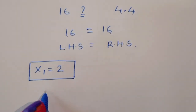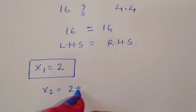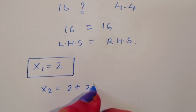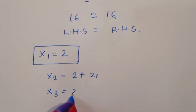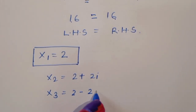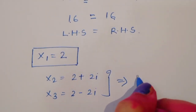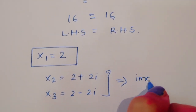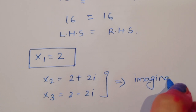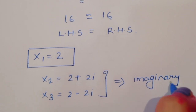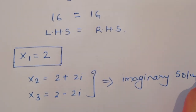x₂ = 2 + 2i and x₃ = 2 - 2i are the imaginary solutions.